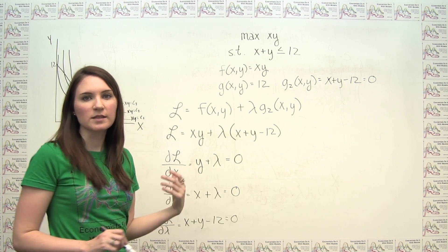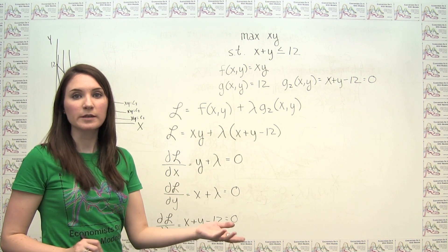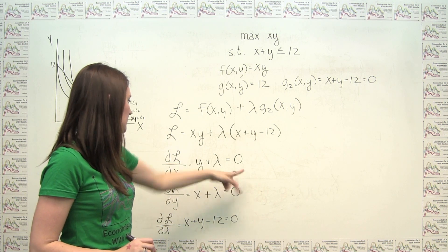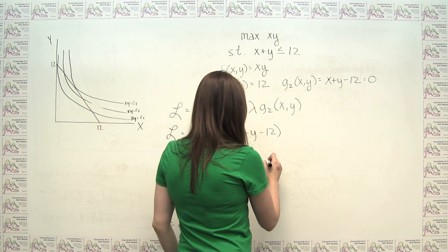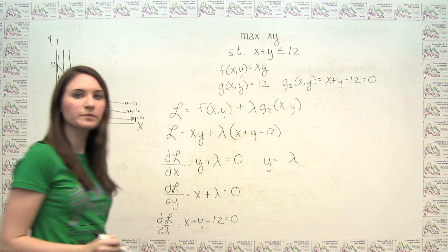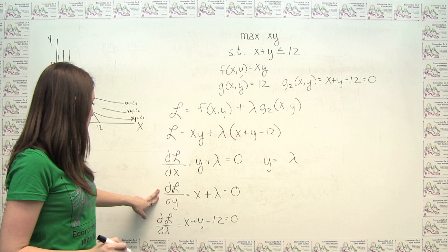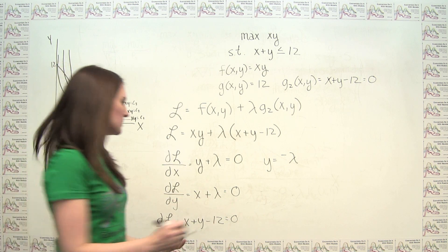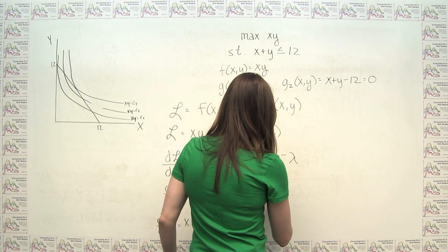To do that, it's probably easiest to put everything in terms of lambda, and then go from there. So we can see here, if y plus lambda has to equal zero, then it has to be the case that y equals negative lambda. If it also has to be the case that x plus lambda equals zero, then it has to be the case that x equals negative lambda.